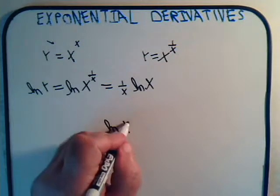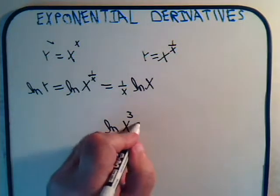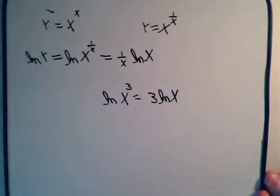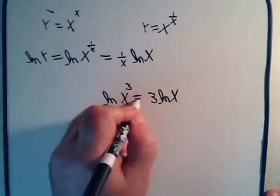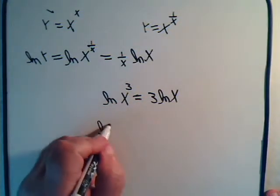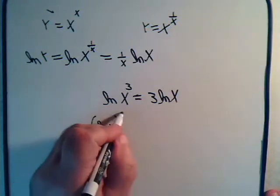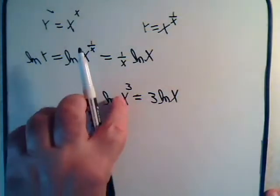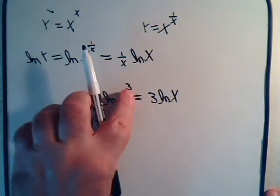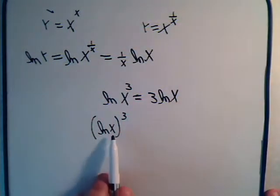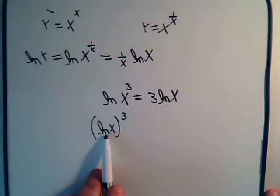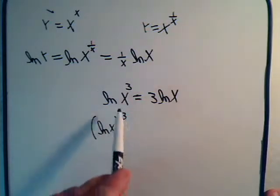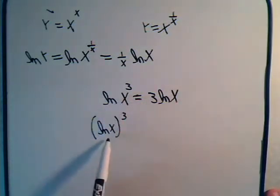Using this property: the natural log of x cubed equals 3 times the natural log of x. But don't get confused — the natural log of x cubed, where you cube x first then take the log, is entirely different from taking the natural log of x first and then cubing the result. This property is valid, but don't confuse the two.